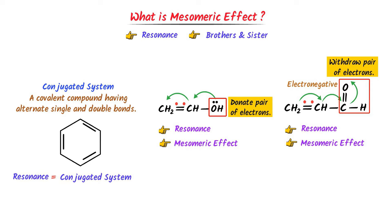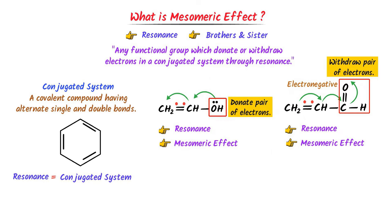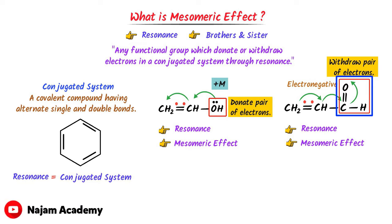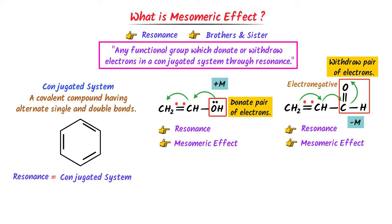Therefore, we define mesomeric effect as any functional group which donates or withdraws electrons in a conjugated system through resonance. This is known as mesomeric effect. The hydroxyl group donates electrons — this is positive M effect.